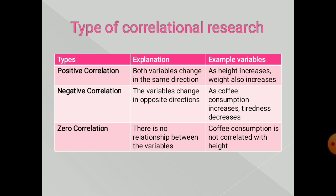The second is negative correlation, where the variables change in opposite directions. For example, as coffee consumption increases, tiredness decreases. The third is zero correlation, or no correlation, where there is no relationship between the variables. For example, coffee consumption is not correlated with heat.